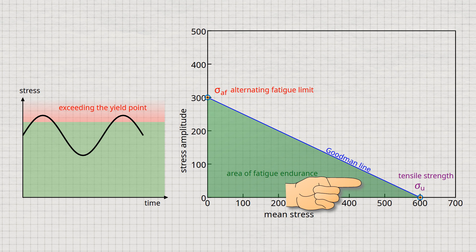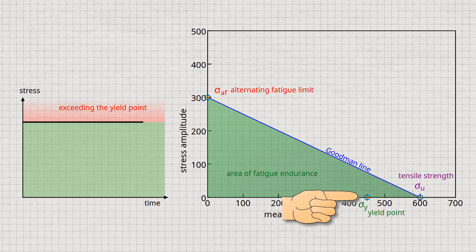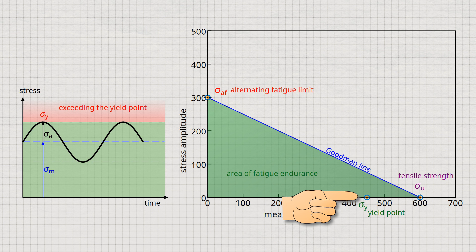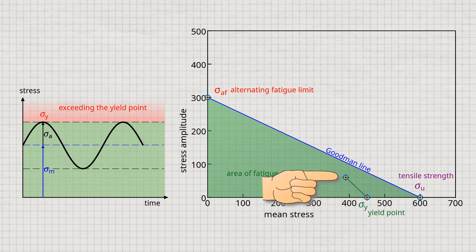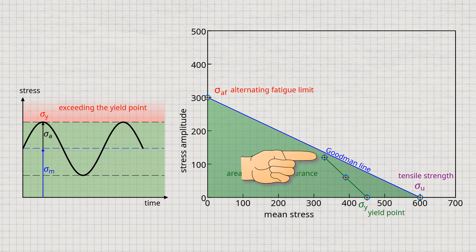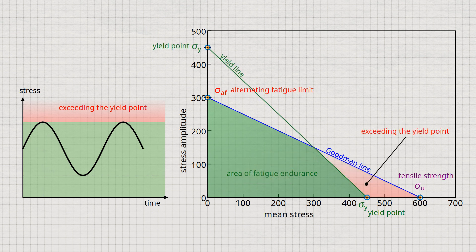In practice, the maximum stress that can be applied with a stress amplitude of zero — which means for static loading — is therefore not the tensile strength, but the yield point of the material. In principle, the sum of mean stress and stress amplitude must never exceed the value of the yield point. Based on the yield point shown in the diagram, the stress amplitude can theoretically be increased to the same extent as the mean stress is reduced. For this reason, an additional limitation is a straight line at an angle of 45 degrees, provided that both axes have the same division.